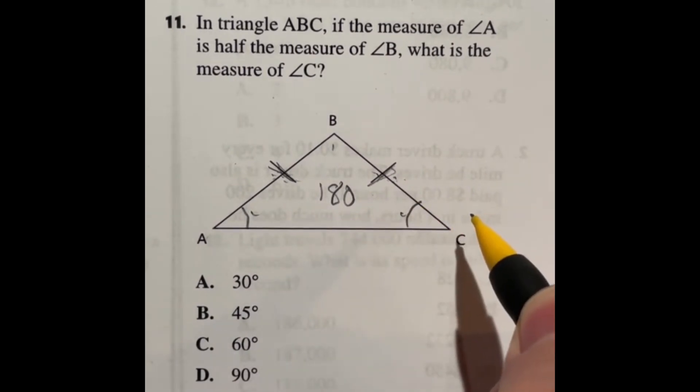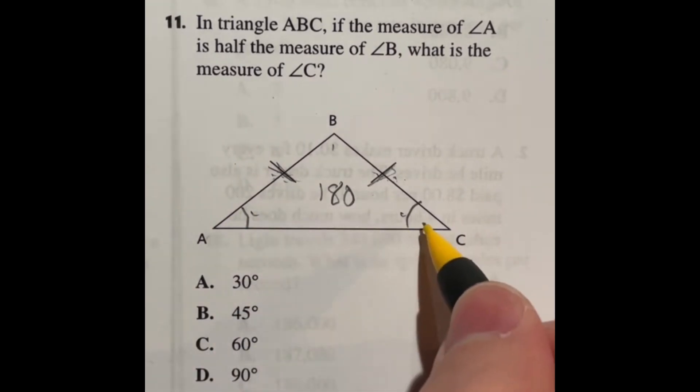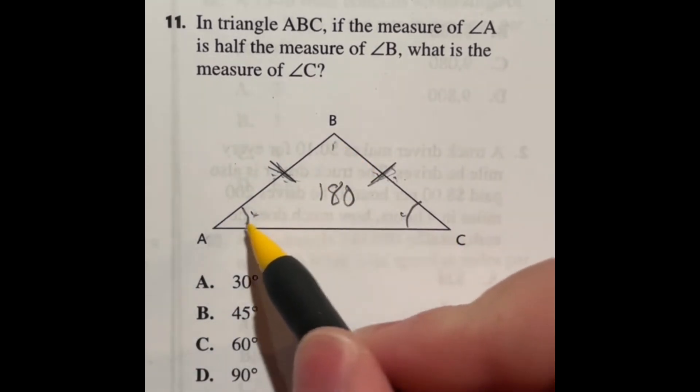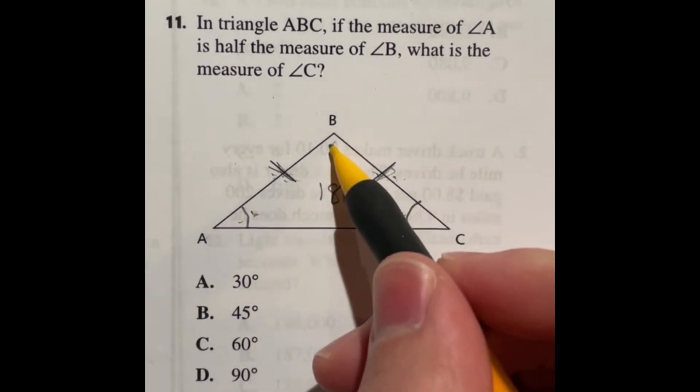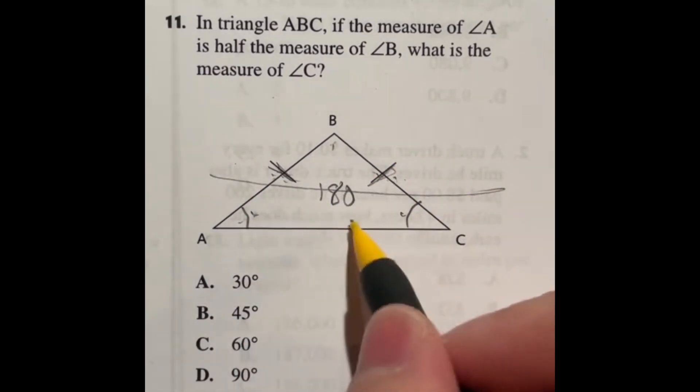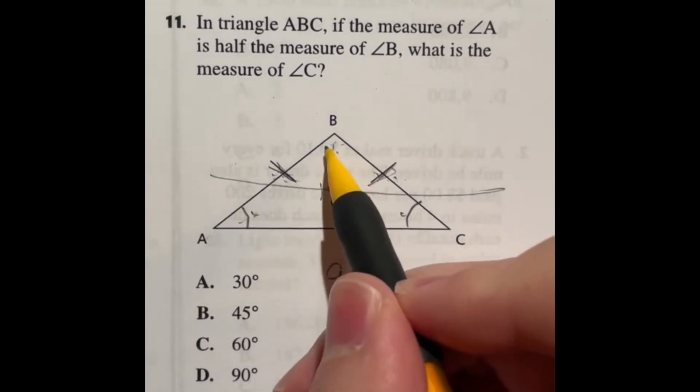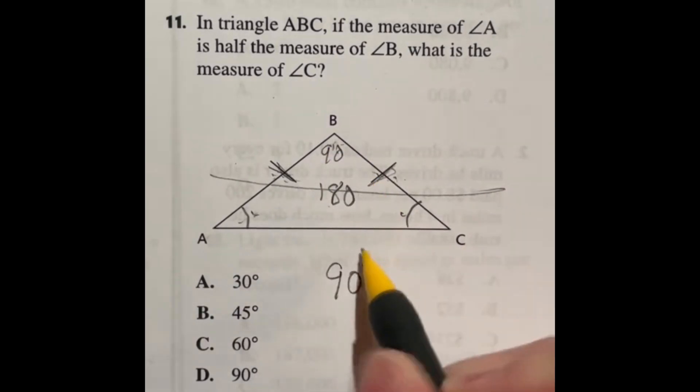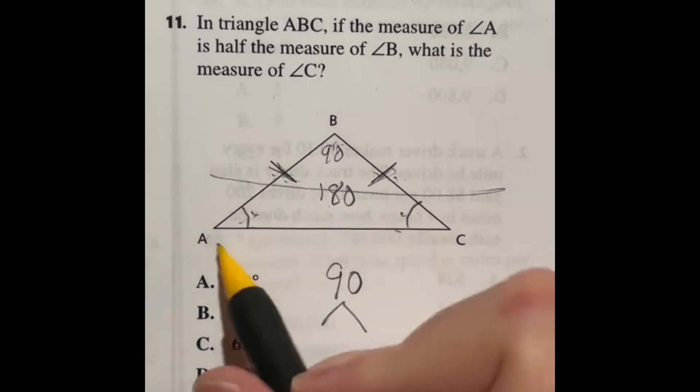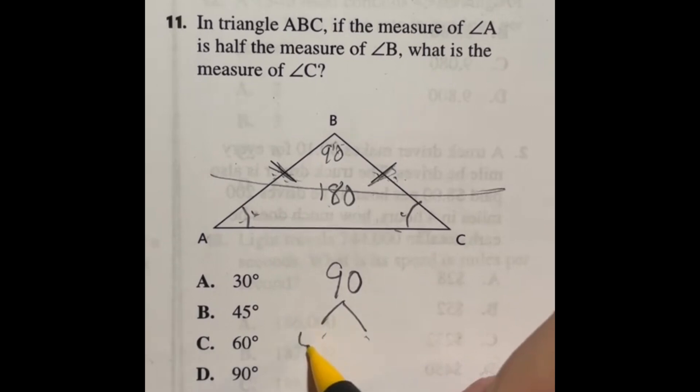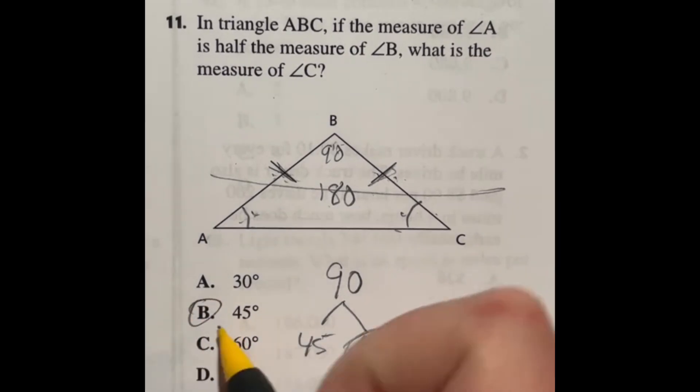All right so now we know A is equal to C and B is twice as much as those so really this plus that should be equal to that so if we're looking at that then that means we've got two parts right these two which add up to this plus this will give us 180 well 180 cut in half is 90 so that means that B must be 90 and A and C are this split in half of that so 90 divided by 2 would be 45 and 45 so that means that C by itself is going to be 45 degrees which is answer B.